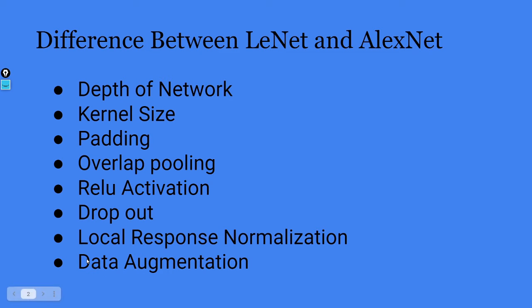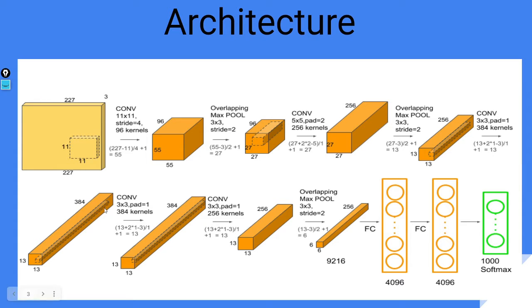Data augmentation is also used. Data augmentation introduces various variances in the input to help overcome overfitting. It creates different scenarios by rotating your image, flipping your image, and applying different possible transformations, so that your model learns various variances of your image during backpropagation. Now let's look at the architecture.